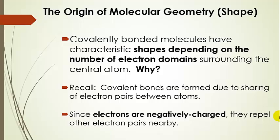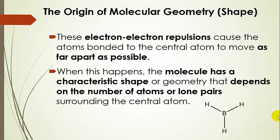Covalent bonds are formed due to sharing electrons, so electron pairs are shared between atoms in the molecule. Also remember that electrons are negatively charged. Negatively charged particles repel other negatively charged particles, so electron pairs are repulsed by each other — they repel each other and move away from each other. As these electrons are repelled, they try to move as far apart as they can from each other in the molecule, and so the molecule ends up with a characteristic shape.